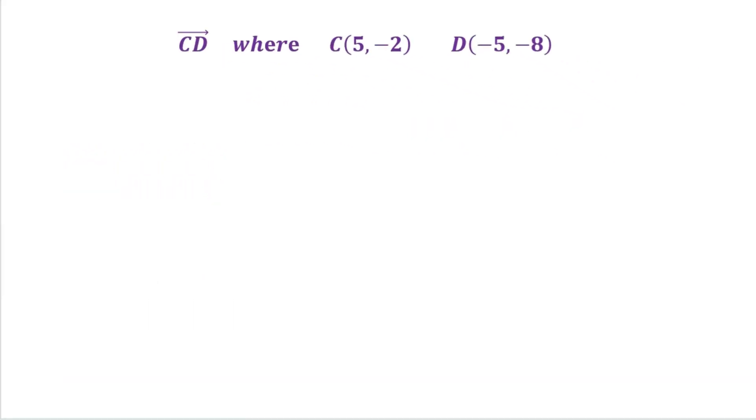So let's take a look at this example. We have vector CD where the point C is 5, negative 2, and the point D is negative 5, negative 8. So I'm going to label these coordinates. Let's take a look at the component form first.